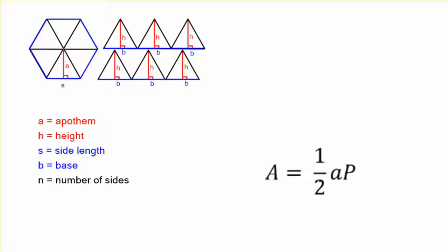We can just put them all together. Now, how does that become one-half ap? Area equals one-half ap. Well, let's go ahead and start off by doing it the easy way. You can use this formula if you want.